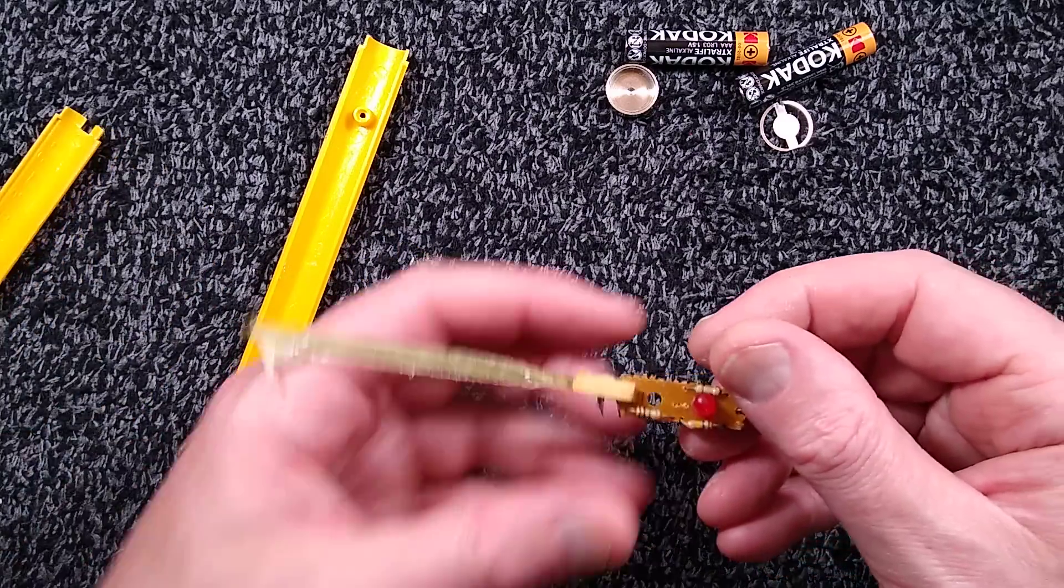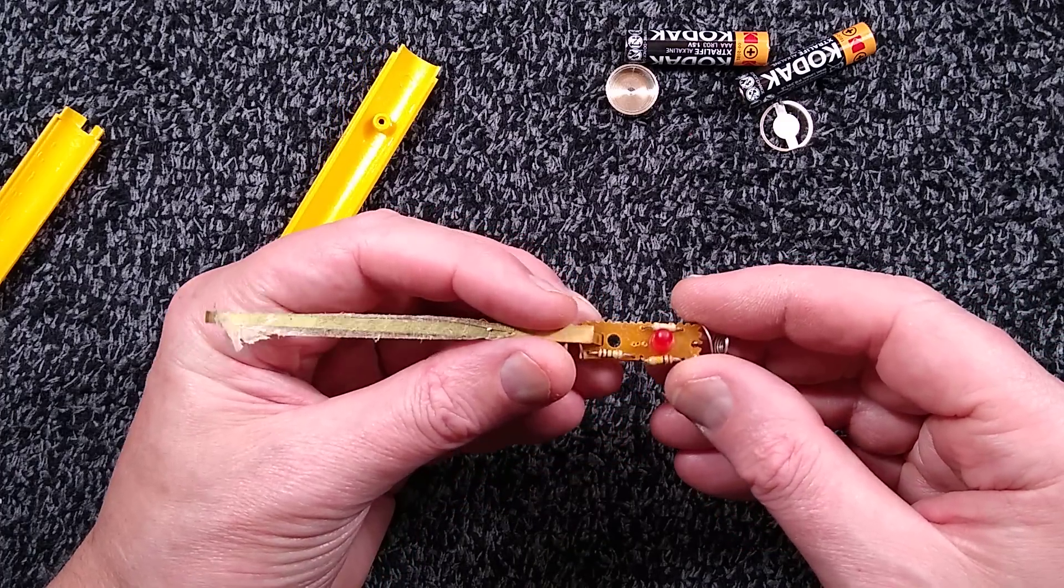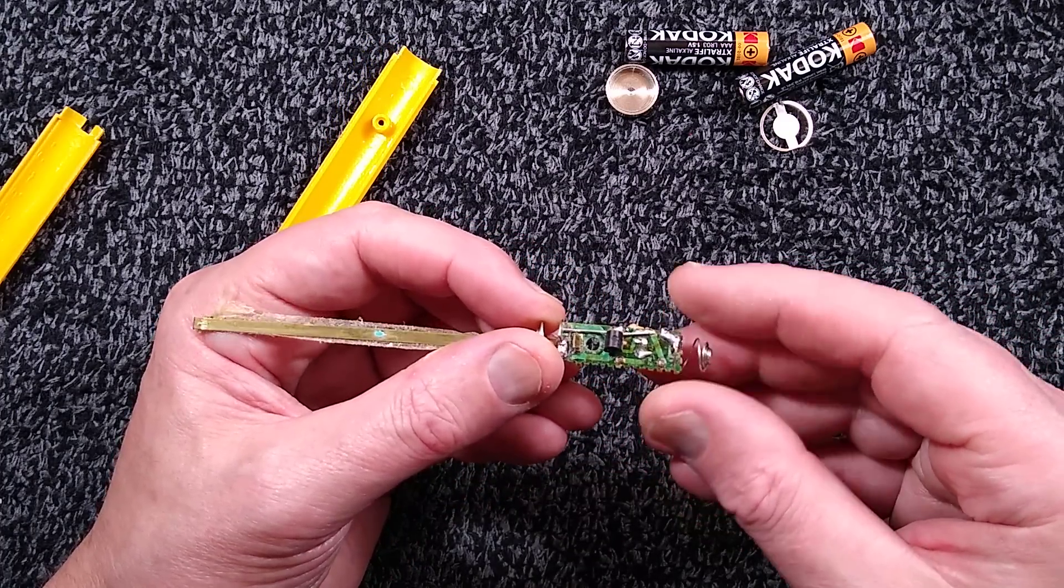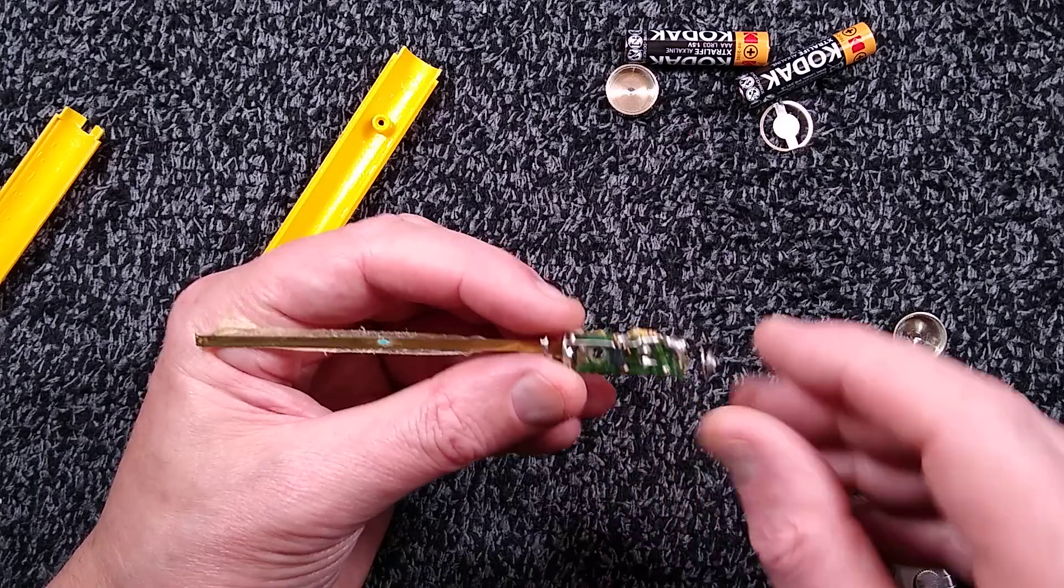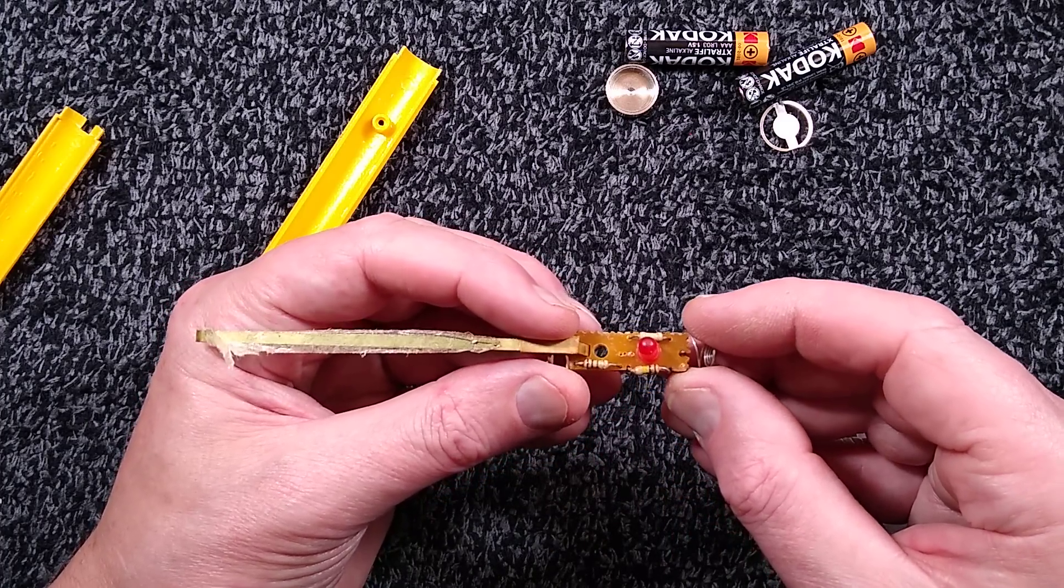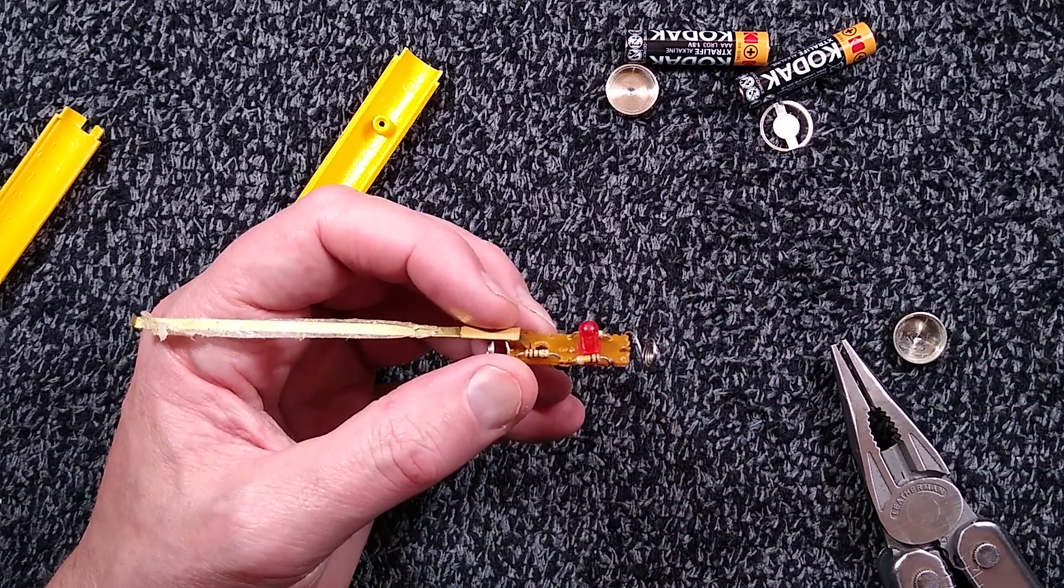This is not coming out easily. I'll wiggle it out and then, oh it's out. Blimey it's got three resistors, how exciting, and a transistor. I shall reverse engineer this and we'll see what the circuitry is like.